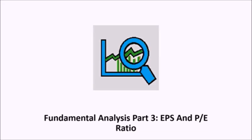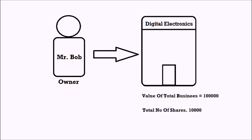Fundamental Analysis Part 3: Earnings Per Share and Price to Earnings Ratio. In the last video we were talking about Bob's electronic store. We already know that Bob has raised 100,000 rupees by the issue of 10,000 shares. Now let's start the video with an introduction to net profit.